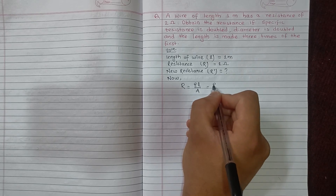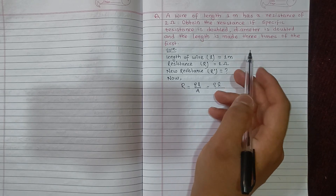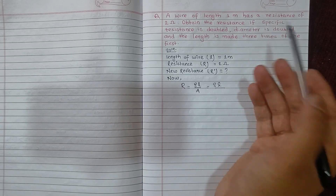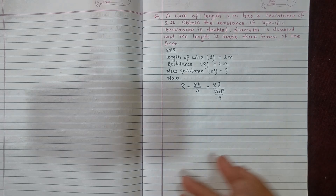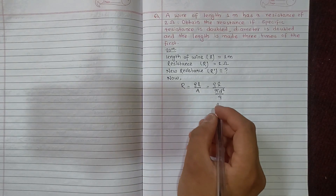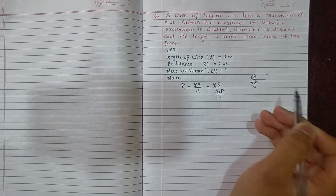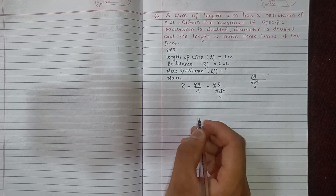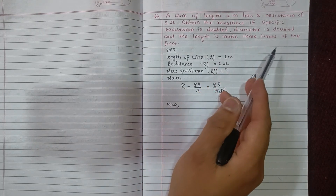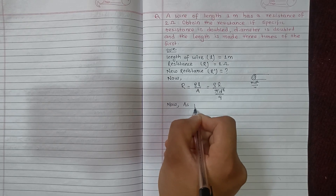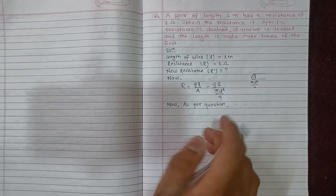Since the wire has a circular cross-section, the area A equals pi d squared by 4, where d is the diameter. So we can write R equals row L divided by pi d squared by 4. This is the formula we will use as per the question conditions.